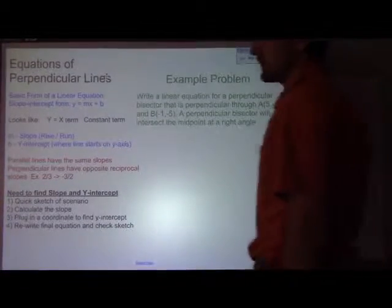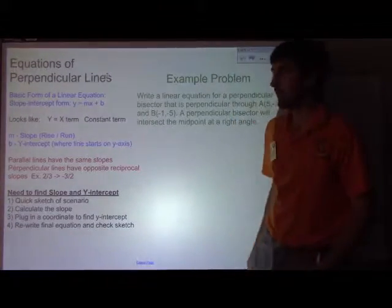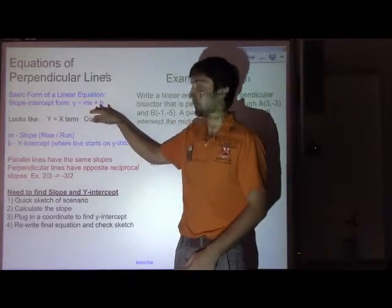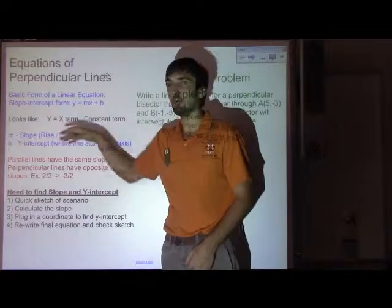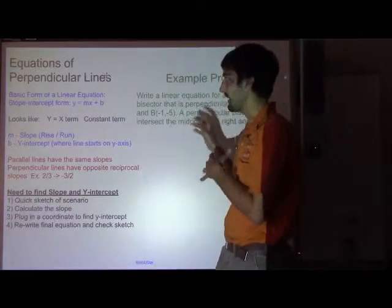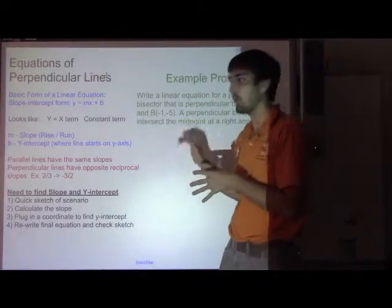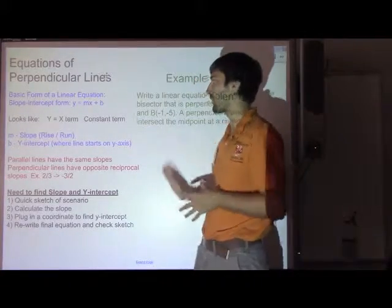All right, today we're going to talk about equations of perpendicular lines. The basic form of a linear equation is y equals mx plus b. m stands for the slope, which is the measure of how steep a line is, and b is the y-intercept, which is your starting point where it crosses the y or vertical axis.